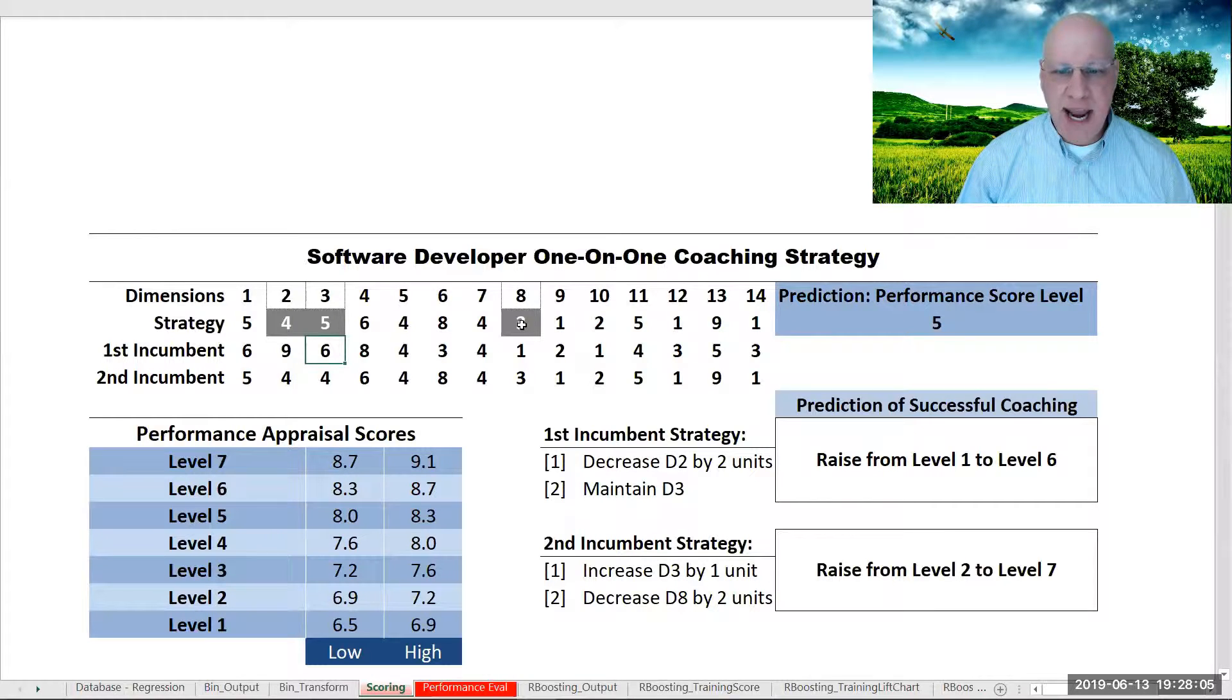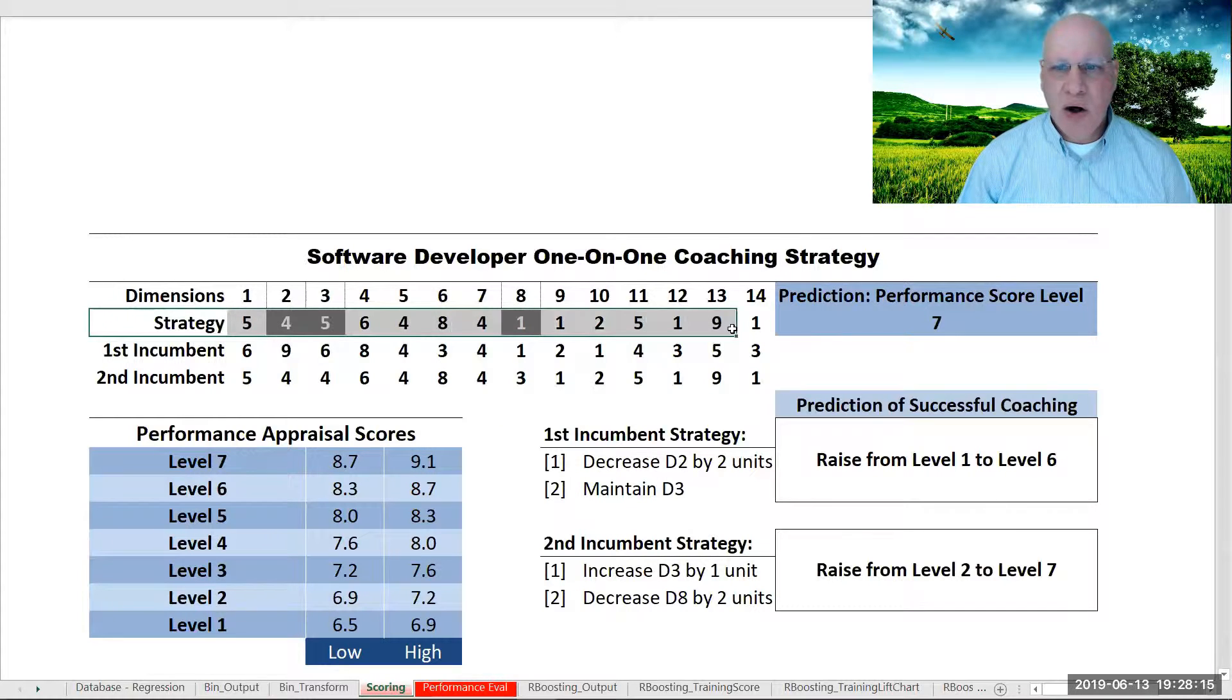In dimension 8, we can decrease this through conscious effort and willpower, two units, and now we see a prediction of performance all the way up to the highest level.